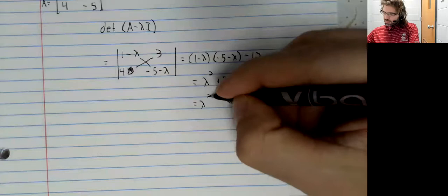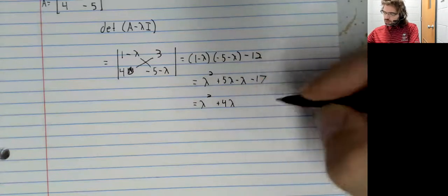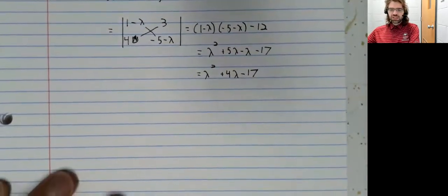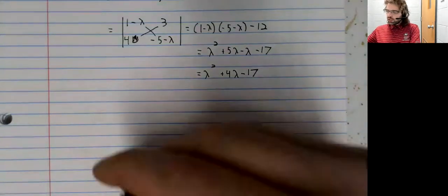So lambda squared plus 4 lambda minus 17. There's our characteristic polynomial.